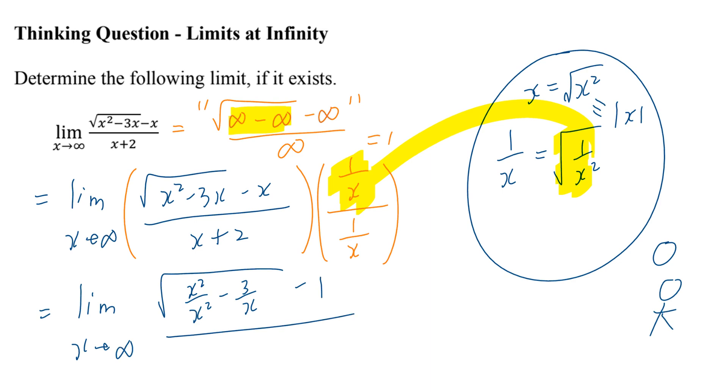All over, if you look at the denominator, x divided by x is 1 plus 2 divided by x.